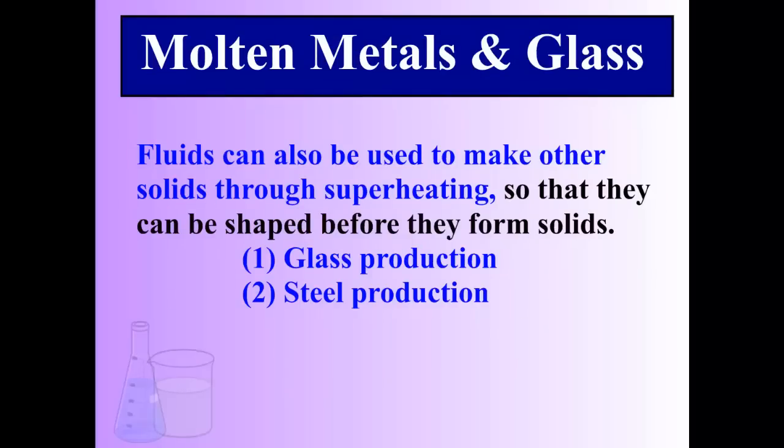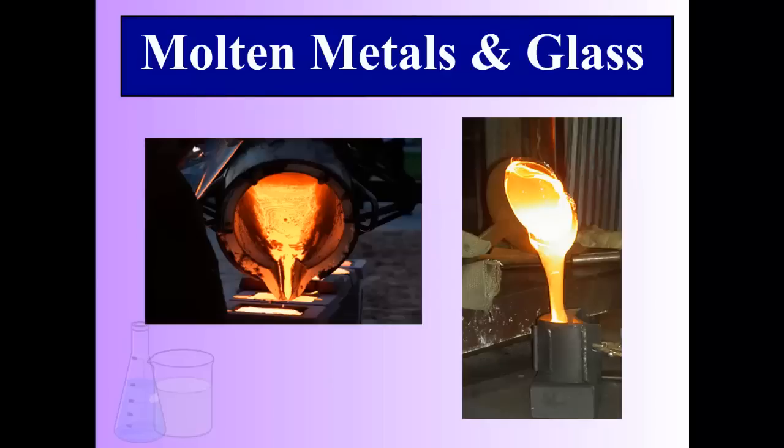The second way is we can use fluids to shape something, or to make other materials through superheating. Glass production and steel production are two very good examples — we superheat them and then form them into the mold we desire. Once they cool, we have a brand new shape. Fluids used in the molten state allow us to shape these solids.